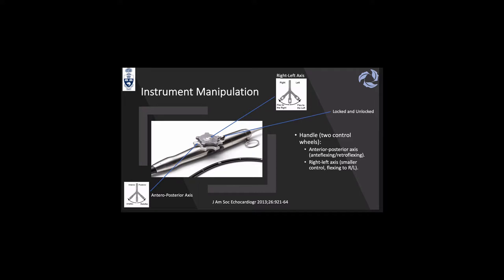For instrument manipulation, the classical probe shown here is specifically the X7 Philips probe — same principle applies to GE and Siemens machines. There are two knobs: the smaller handle on top gives you right-to-left axis movement of the probe; the larger handle underneath allows anteflexion or retroflexion. You also have the ability to lock or unlock probe movements. The GE machine has an extra knob in the middle that lets you jump from 0 to 90 degrees in angle.